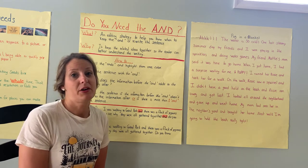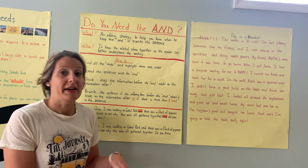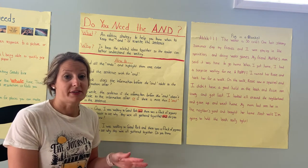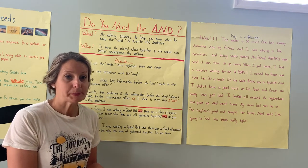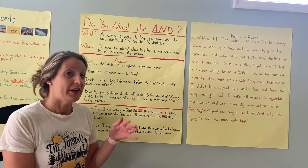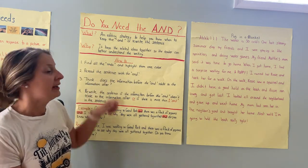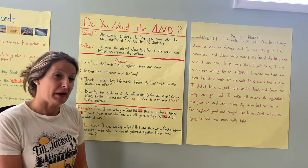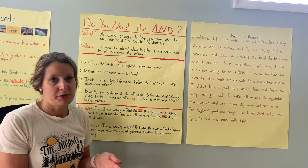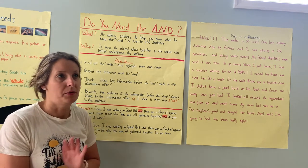So here is how our strategy works. The first thing we're going to do is go back and reread whatever it is that we wrote. On that second reread, we're going to look for all of the ands in our writing and we're going to highlight them. You can choose any color you want — red, green, purple, yellow, whatever.